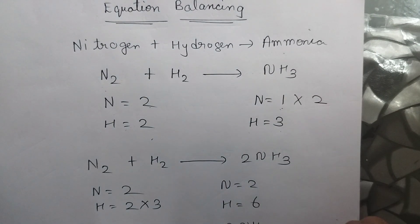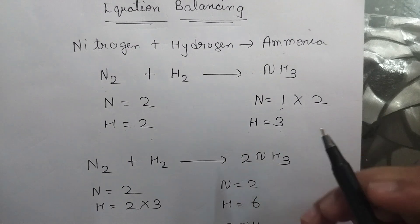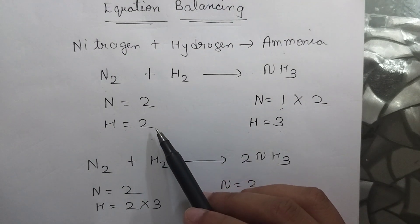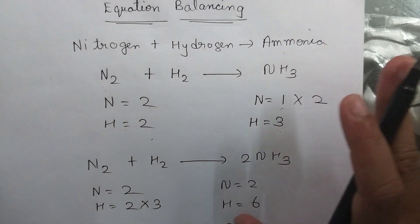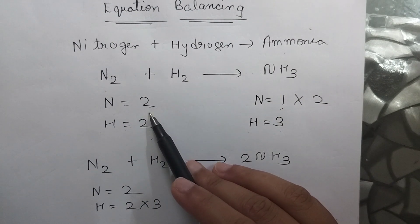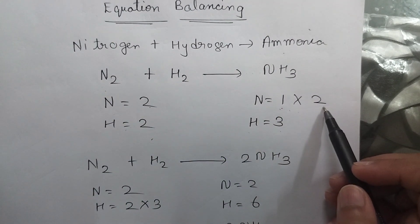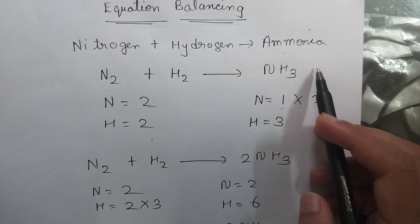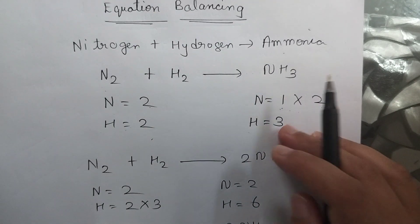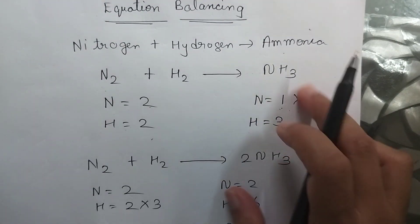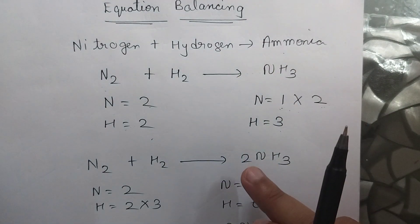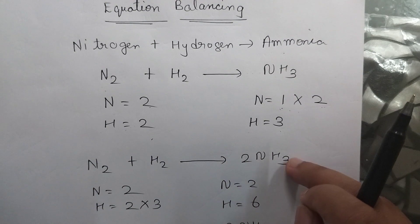So the first step is balance the number of species by multiplying with any requisite quantity. So go for the simplest numbers. Nitrogen over here is 2. Here it is 1. To make it 2 what we need to do? Multiply it with 2. So we will write 2 before NH3.